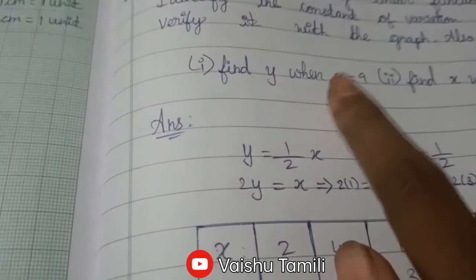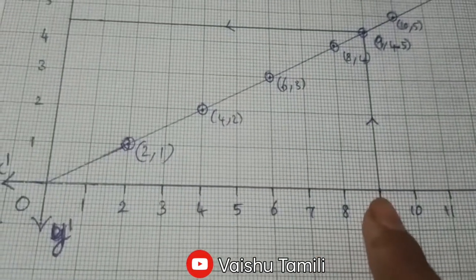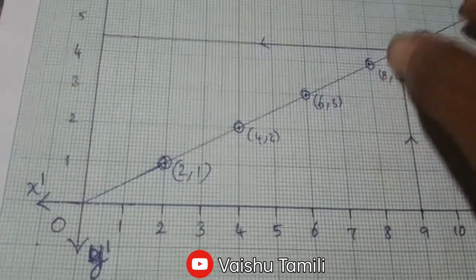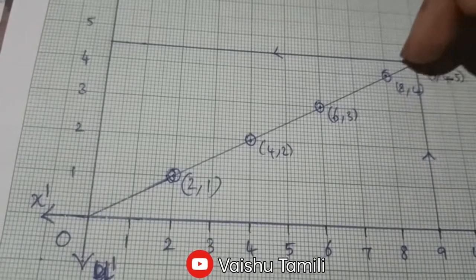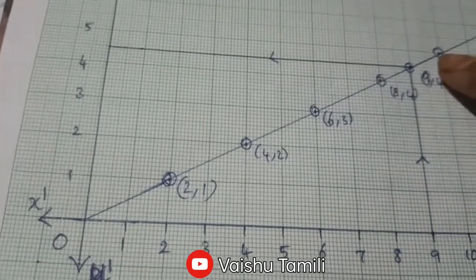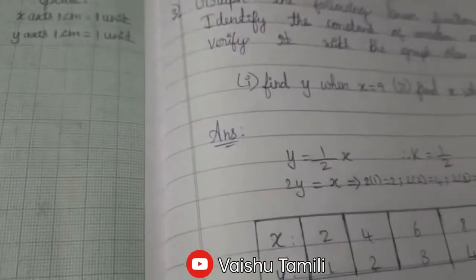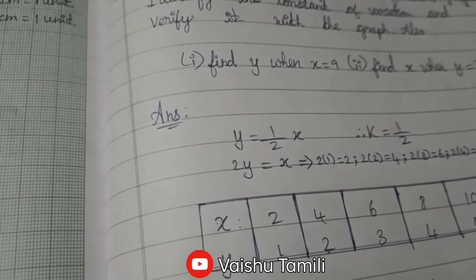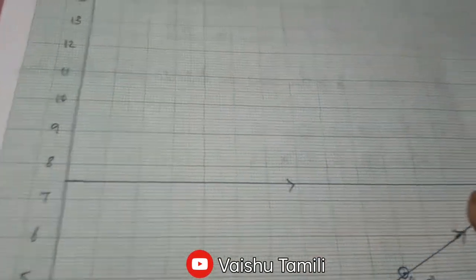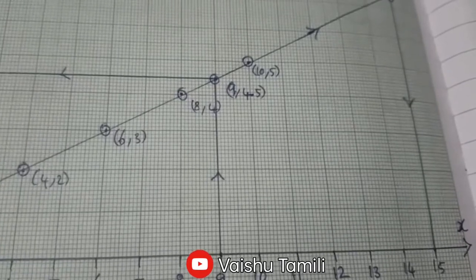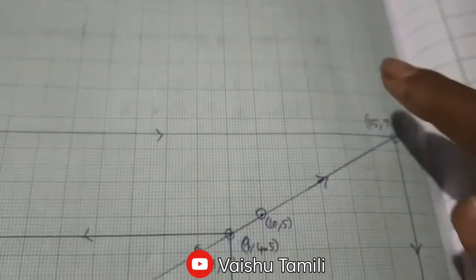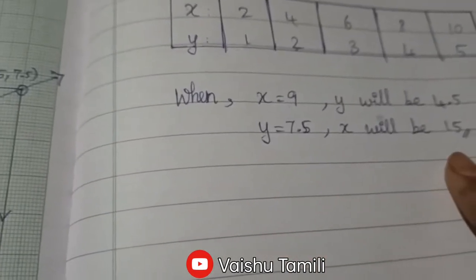Find y when x is equal to 9: drop a straight line at x=9 on the graph and join — this value is 4.5. Next, find x when y is equal to 7.5: draw a straight line at y=7.5 and join — the answer is x equals 15.